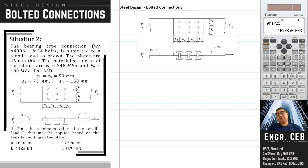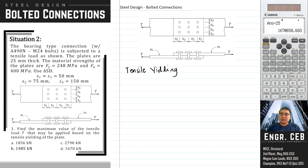So first we will solve the capacity of the plate based on tensile yielding. We can analyze any of the plates since they are the same. The formula for tensile yielding is T sub N equals F sub Y times A sub G. So we can solve first for A sub G, the gross area.